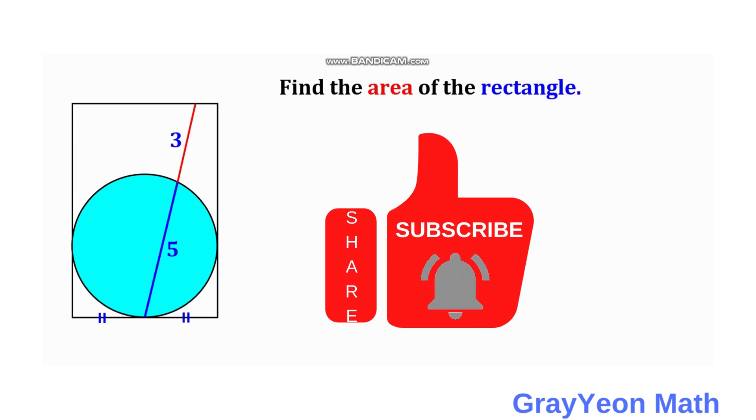We have a rectangle and inside this rectangle is a blue circle and a secant to the circle. This secant has 5 units inside the circle and 3 units on the outside of the circle up to an edge of this rectangle. We see that this secant line bisects this side of the rectangle, the length, and we are to find the area of the rectangle.